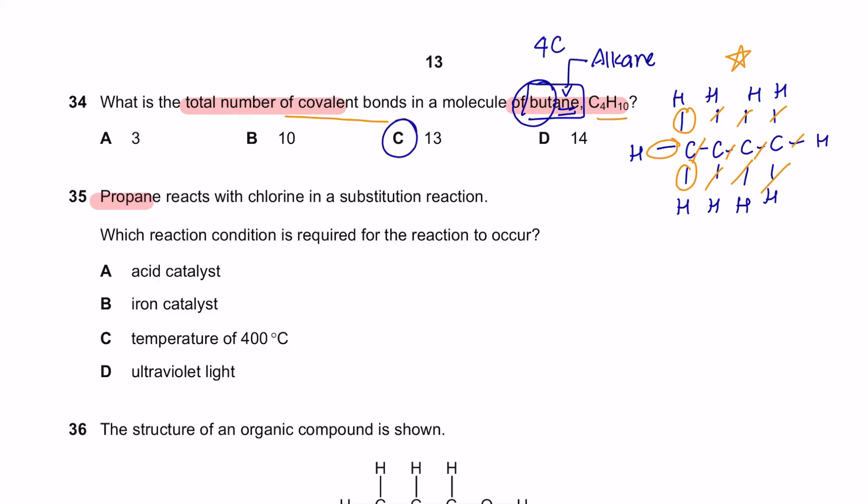Next, propane reacts with chlorine in a substitution reaction. Which reaction condition is required for the reaction to occur? Propane is a compound from the homologous series of an alkane. Alkane cannot go through addition process so it will go through a substitution process. And the condition required is the presence of ultraviolet light.